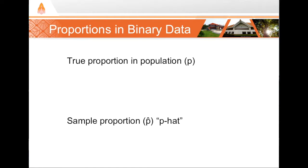Just as before we needed separate symbols to represent our population mean and our sample mean when talking about continuous data, we also use separate symbols to distinguish between the population proportion and the sample proportion. We'll use p to refer to the population proportion and p-hat for the proportion found in our sample of the population.